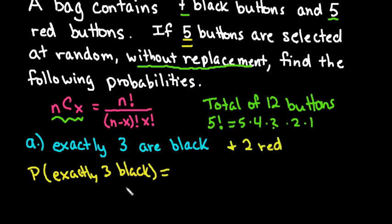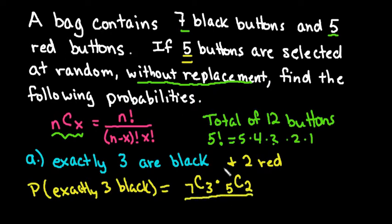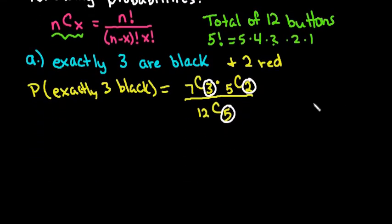We take out of our seven black buttons exactly three, so we set up 7C3. Then for the red buttons, we have five of them and we want two, so we set up 5C2. This is divided by our total: since we have 12 buttons and are selecting five, we use 12C5. Remember, with your combinations the number chosen from each color — three plus two — should equal the total selected, five.